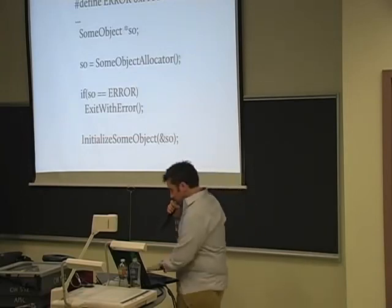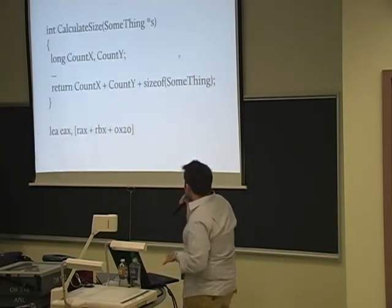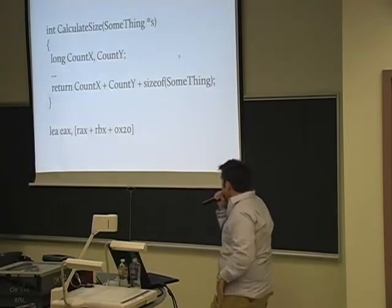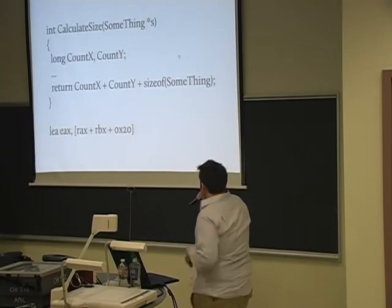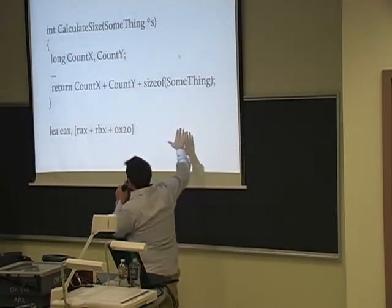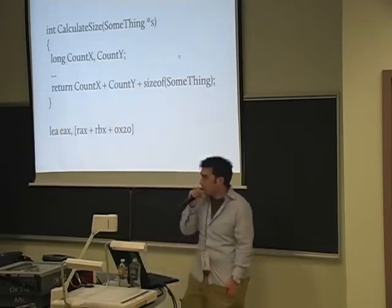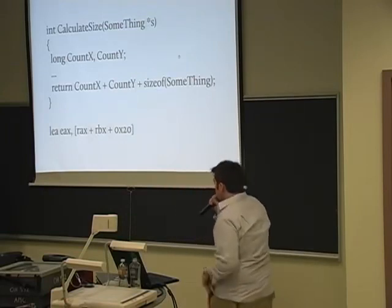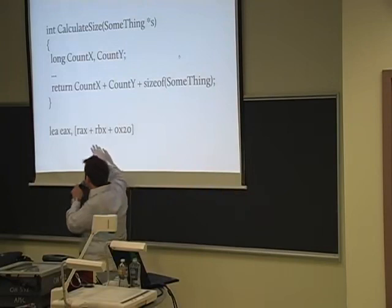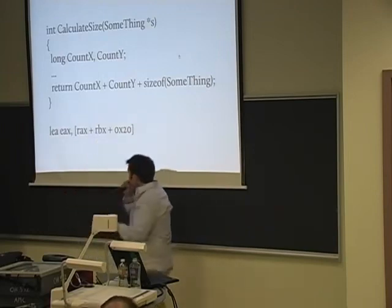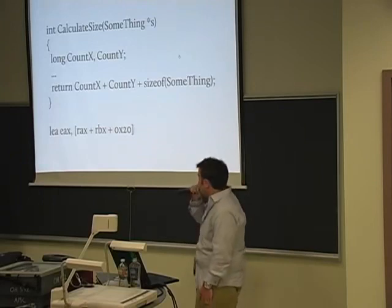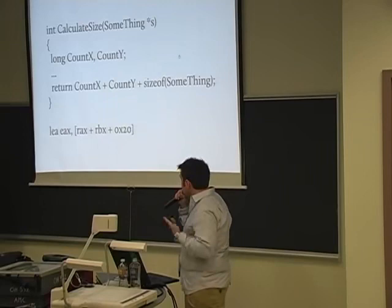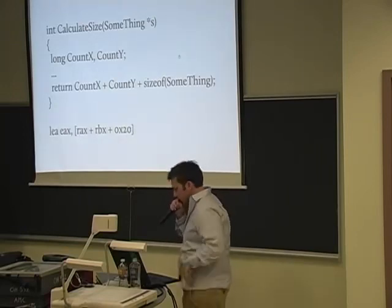This one relates to calculating the size of something on a 64-bit system. It's not easy to see exactly what's going to be returned — you need to keep three or more lines of code in your head. However, from the binary perspective, someone familiar with 64-bit x86 code will see that it's loading the RAX and RBX registers into EAX. Since RAX and RBX are 64-bit, loading them into EAX can truncate the value. If it's calculating the size of something to store in memory, it can end up wrapping and cause a smaller allocation, allowing attackers to overwrite memory.